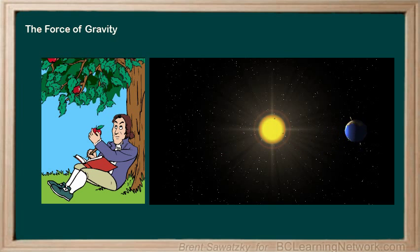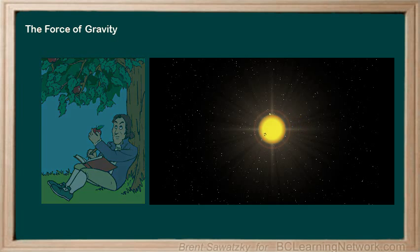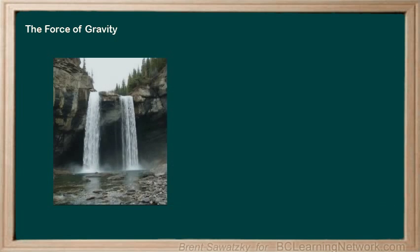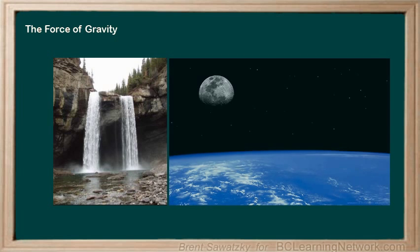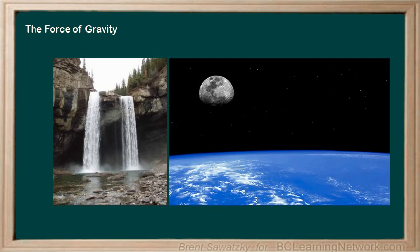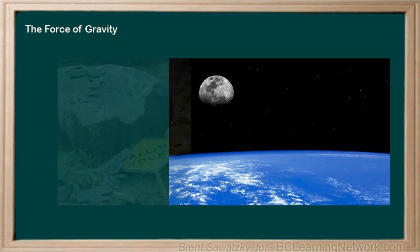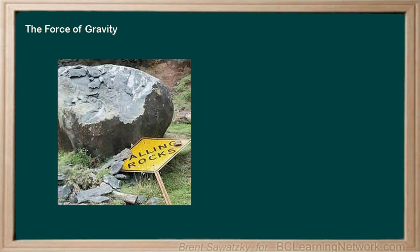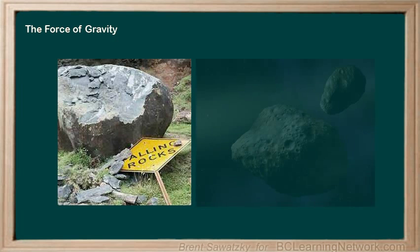And what was so utterly amazing was that Newton suggested that the same force that caused that apple to fall to the ground also controlled how the earth rotated around the sun. The same force that kept the water in our oceans kept the moon orbiting around the earth. The same force that caused a rock to roll down a hill controls the paths of asteroids in outer space.